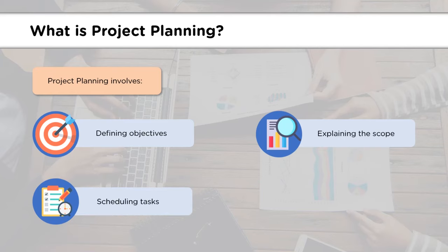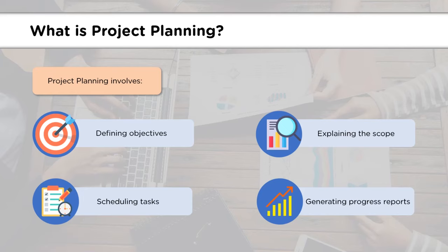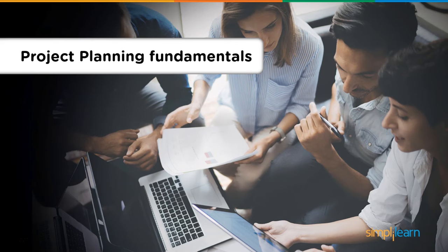The third component is forming a schedule, which is important to perform different tasks of a project, each task having its own start date and end date. This helps a project finish within the scheduled time. Lastly, we have making and generating progress reports, in which all that occurred during the tenure of the project is documented. This helps in evaluating the project and aids in forthcoming projects.